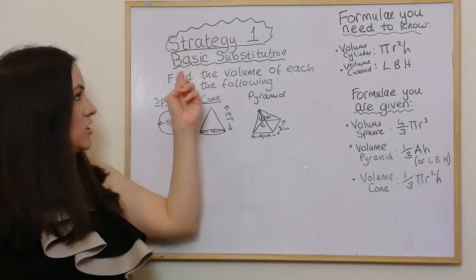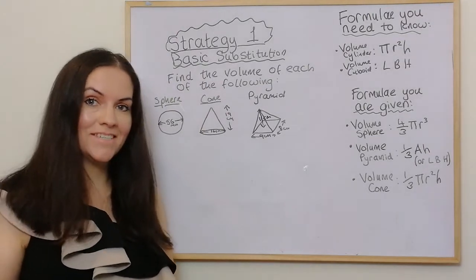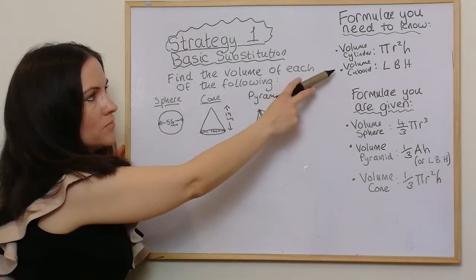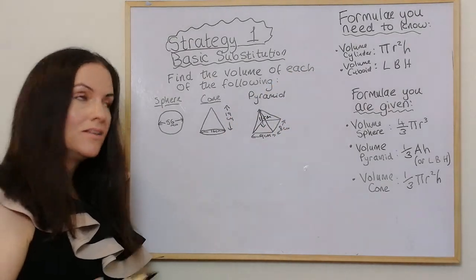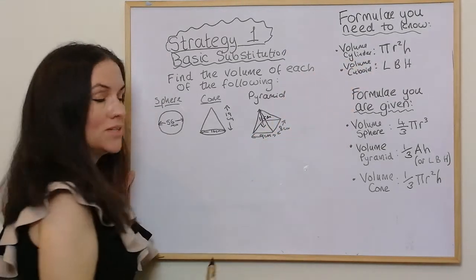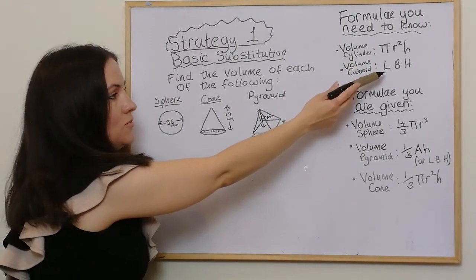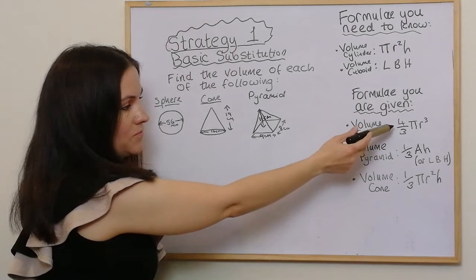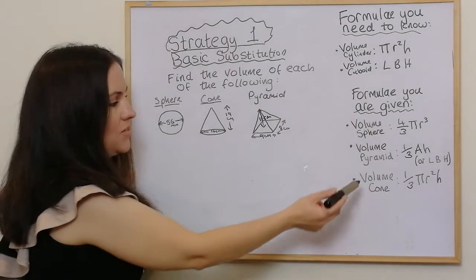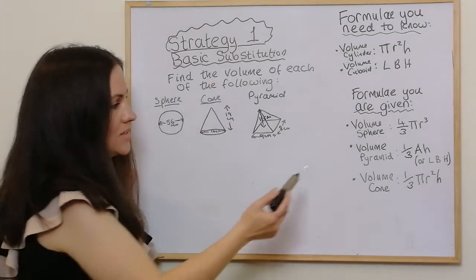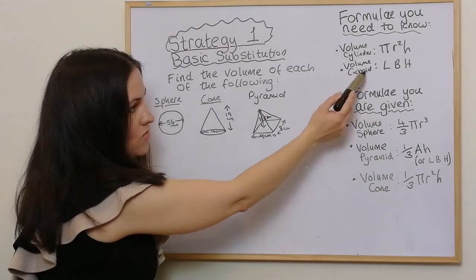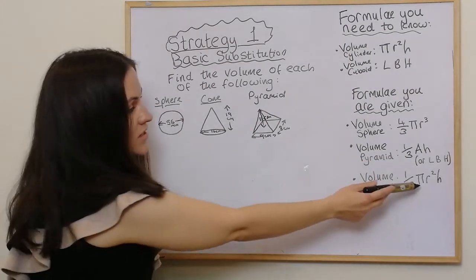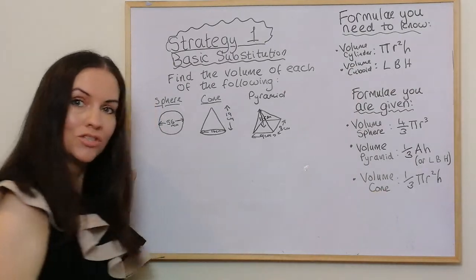The very first strategy you would use is just basic substitution — probably the easiest. I've got a list of the formulas you need to know. You need to know these off by heart: the volume of a cylinder is πr²h, and the volume of a cuboid is lbh — length times breadth times height. The formulas you're given are the volume of a sphere, the volume of a pyramid, and the volume of a cone. The volume of a pyramid is very similar to the volume of a cuboid except you get a third of it, and the volume of a cone is very similar to the volume of a cylinder except you get a third of it.